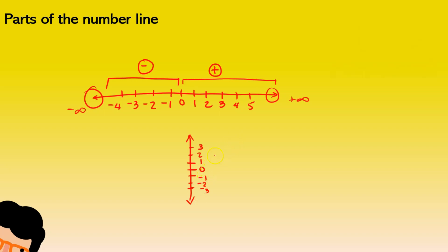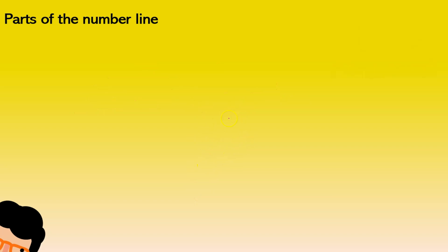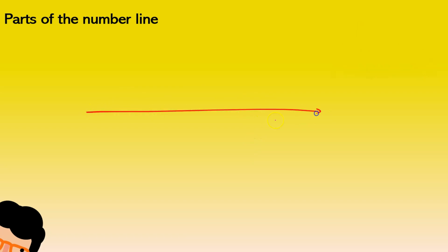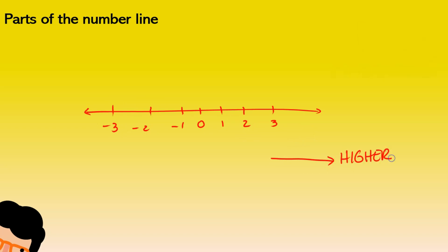We have to remember that numbers that are to the right are always going to be higher. And the same thing goes for numbers that are on the upper side or above another number. So let's say we have a number line and we write down zero, one, two, and three, and we have minus one, minus two, and minus three. We have to remember, if a number is placed to the right, that means that number is going to be higher than the one on the left.